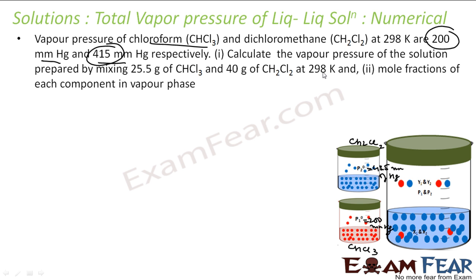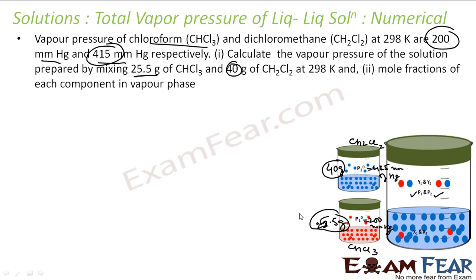We have to find the vapor pressure of the solution — that is P1 and P2 — and also y1 and y2. For that, we first need to find x1 and x2. The problem states we are taking 25.5 grams of CHCl3 and 40 grams of dichloromethane (CH2Cl2). So we need to find the mole fractions x1 and x2.